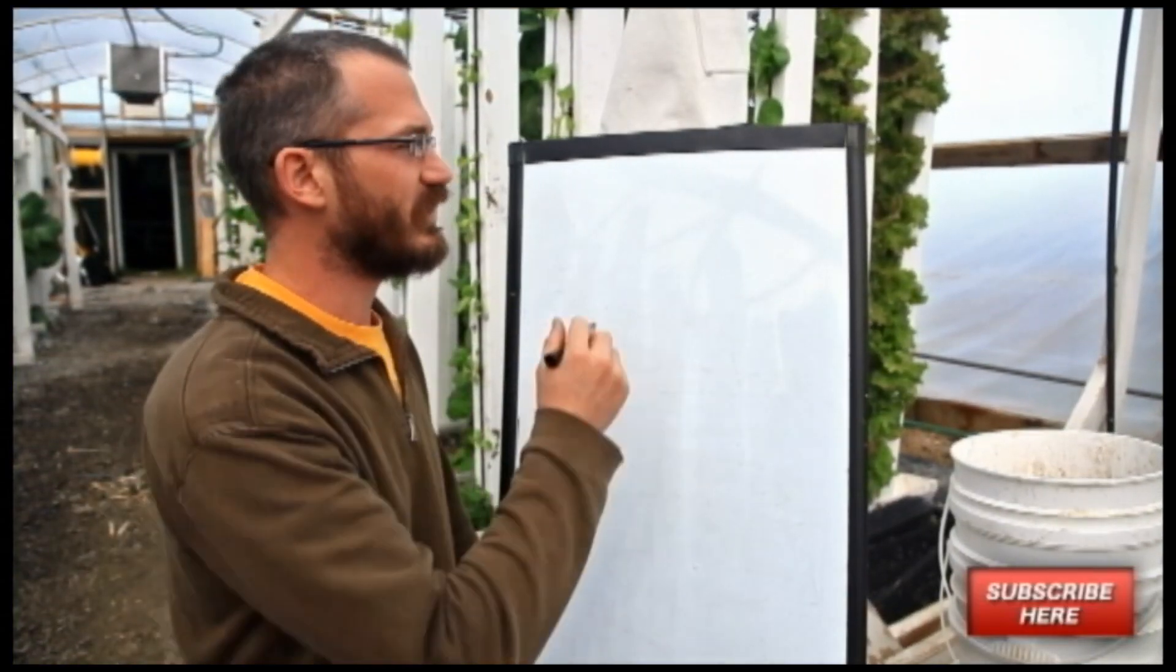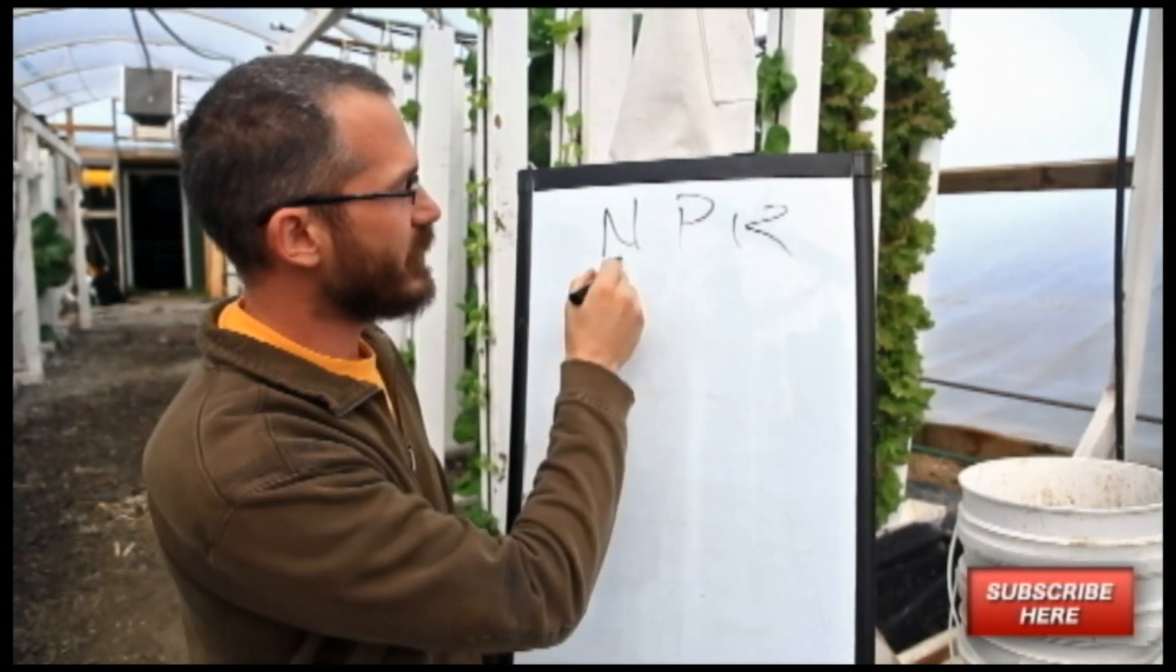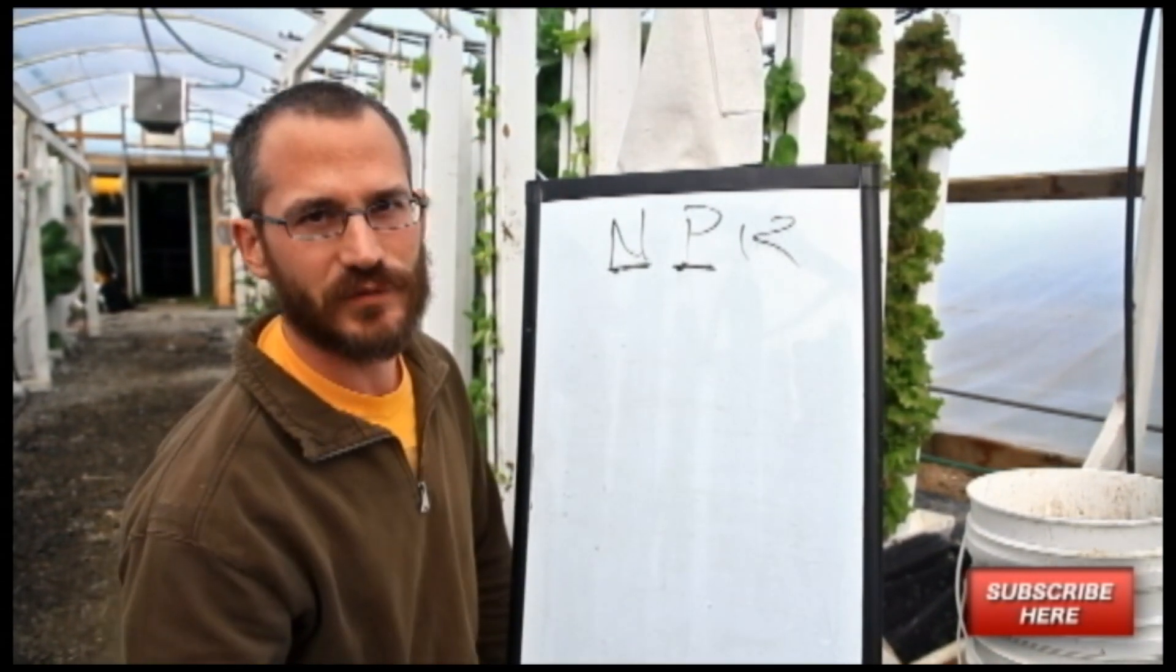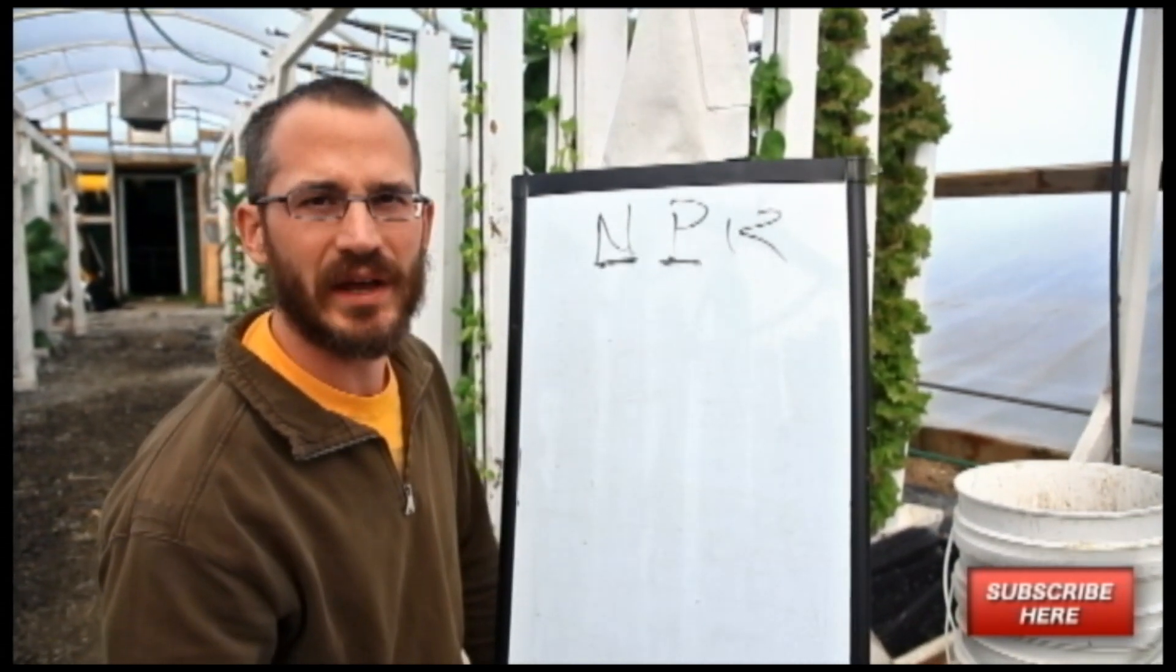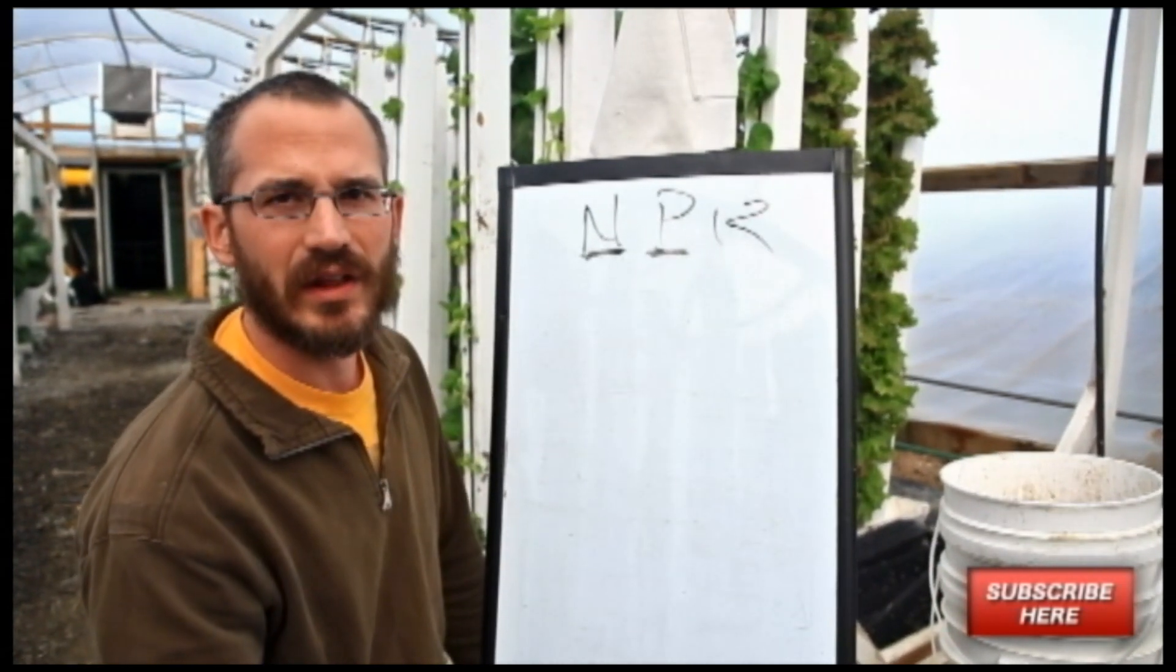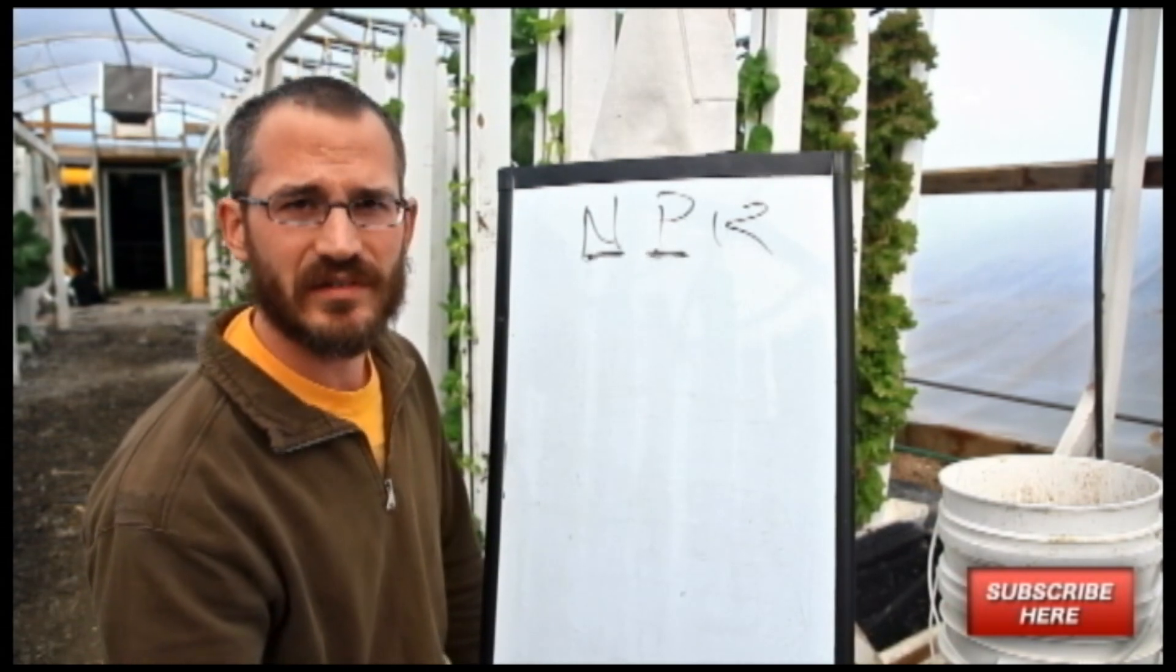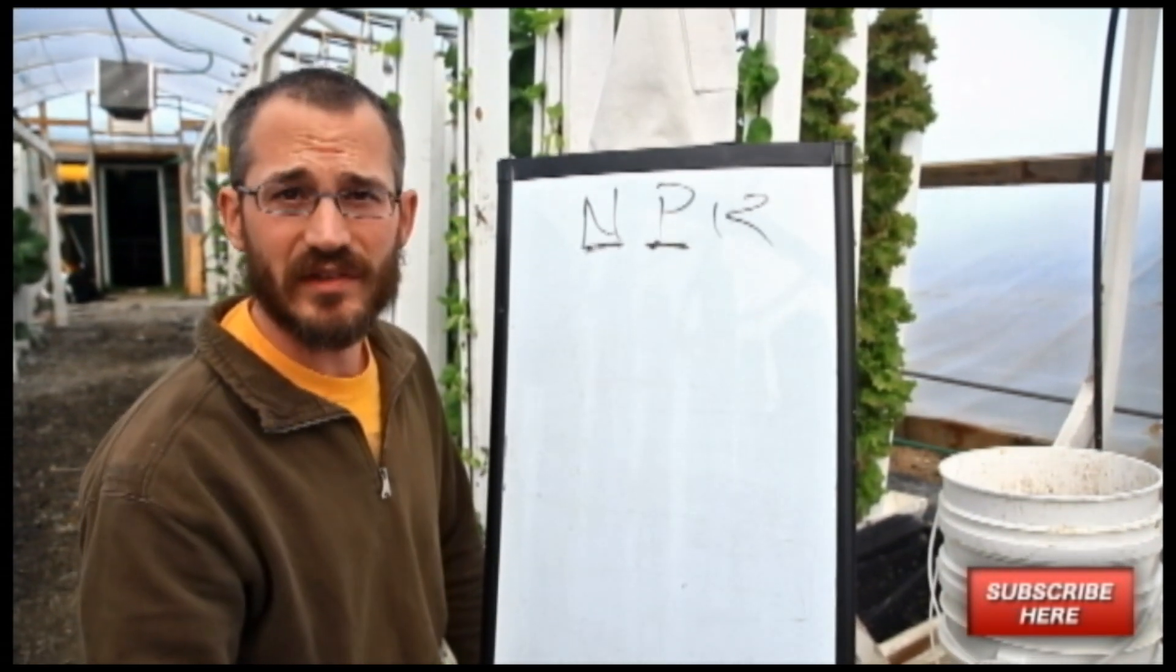So phosphorus is the P in our NPK rating, if you guys remember that. We've already talked about nitrogen in detail. Next on the list is phosphorus. Phosphorus is a really important element in plant growth and development. Phosphorus is key in a lot of cellular metabolism and a lot of the operations that plants do internally.